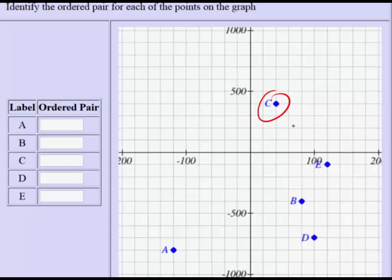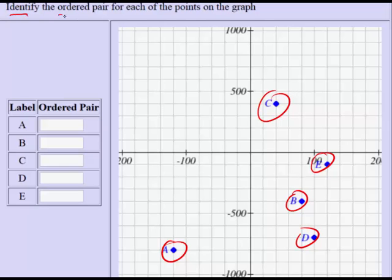In this problem, we are given several points on a graph, and our job is to identify the ordered pair that corresponds to each point. So for example, this point here, C, we need to identify its coordinates and write our answer in point notation in this area here.